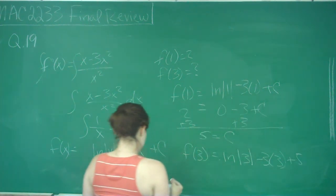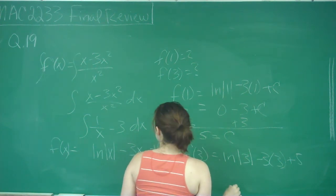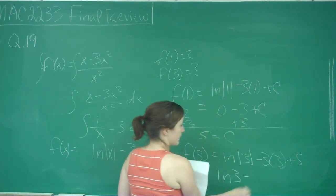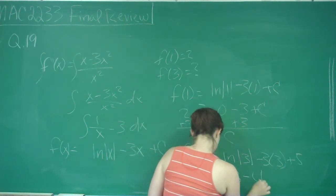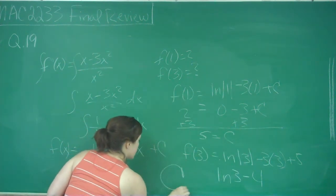So for us it's going to be ln(3) - 9 + 5 = ln(3) - 4, and that is the answer of choice C.